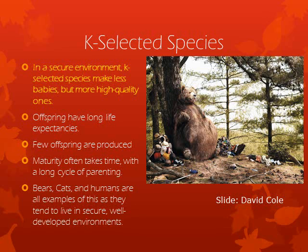Bears, cats, and humans all grow up in comfortable environments and can therefore put more energy into reproduction. Their offspring, in turn, live longer, are more secure, and more likely to survive. However, there are less of them, as the energy required to produce them is so much greater than in R-selected species.